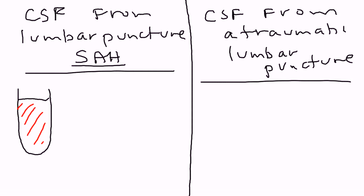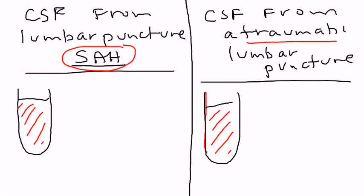Now, let's say you do a lumbar puncture on a person who doesn't have subarachnoid hemorrhage. But during the lumbar puncture, you cause some trauma. Cause some bleeding. Is the person going to have blood in the CSF? Yeah, they will.